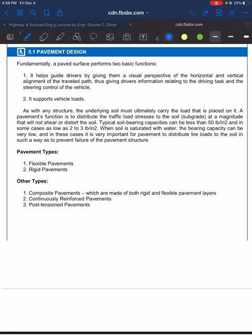Now, as for the pavement types, there are two primary pavement types. First, flexible pavements, and second, rigid pavements. There are other types as well, including composite pavements, which are made of both rigid and flexible pavement layers; continuously reinforced pavements, with continuous steel reinforcement throughout; and post-tensioned pavements.